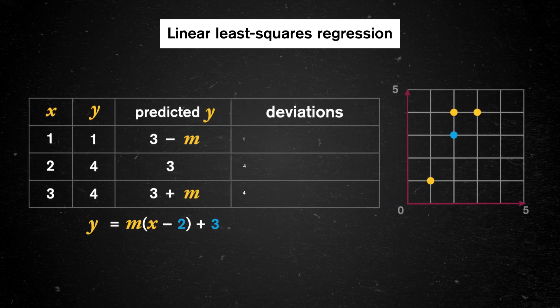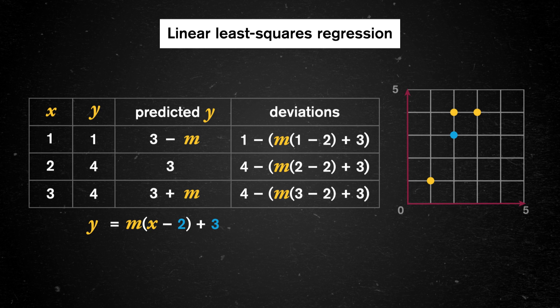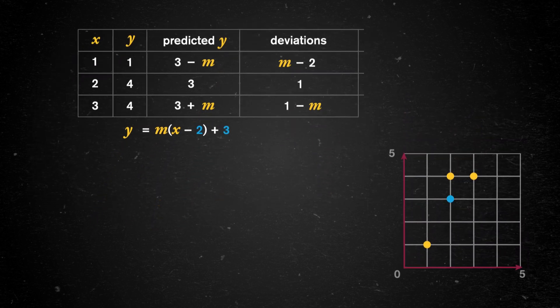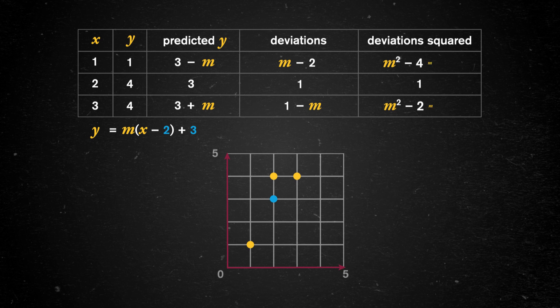We can look at how far off our predictions are from the actual values by finding the deviations — the differences between the actual values and the predicted values. Some predictions will be too high and some will be too low, so we'll have a mix of positive and negative deviations. One way to make things simpler and ensure we're dealing with only positive numbers is to square each deviation — that's where the name 'least squares' comes from. If we add up all the squared deviations, we get the quadratic expression 2m² − 6m + 6, with m, the slope, as the input variable. If we find the minimum of this equation, we'll find the slope that makes the squared deviations the smallest.